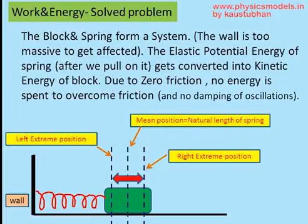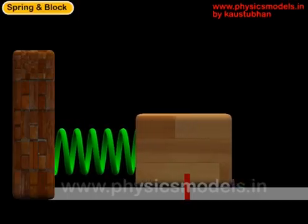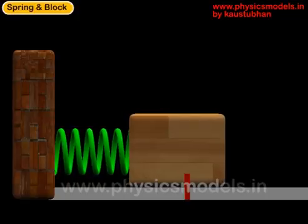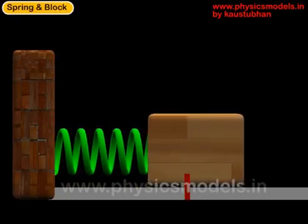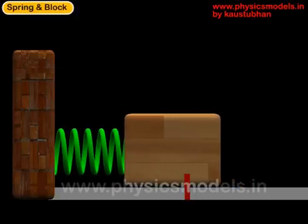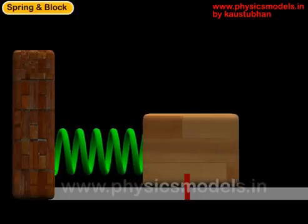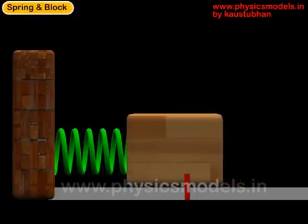The dotted lines show the movement of the block. The central dotted line is the mean position of the block, and the right and left dotted lines show the extreme positions of the center of the block. This animation makes it clear what the oscillation of the block looks like — a lovely animation that gives us a picture of all the positions.